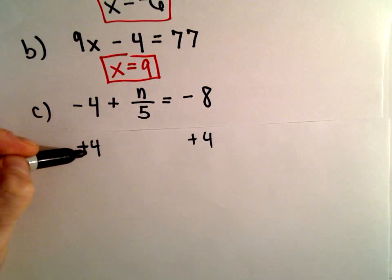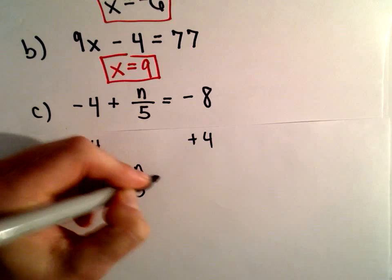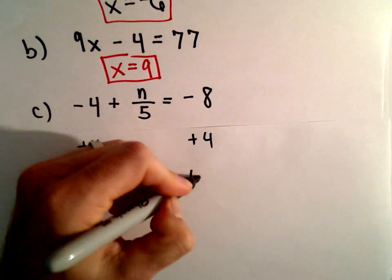So negative 4 plus 4 will just be 0. We can drop down our n over 5. And negative 8 plus 4 is going to be negative 4.